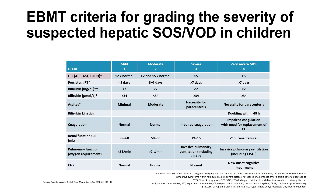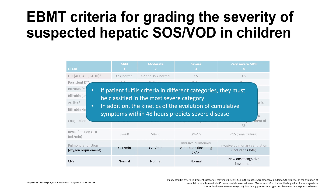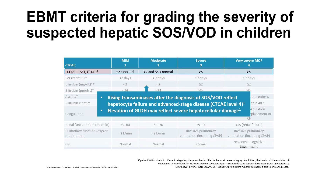The severity classification of suspected hepatic VOD in children is really important because defibrotide is registered for severe VOD, not for mild or moderate VOD — so use in mild or moderate VOD is off-label. The first important message is that if a patient fulfills criteria in different categories, they must be classified in the most severe category. Additionally, the kinetics of cumulative symptom evolution within 48 hours predicts severe disease. Rising transaminases reflect hepatocyte failure and advanced-stage disease; elevation of GLDH may reflect severe hepatocellular damage.